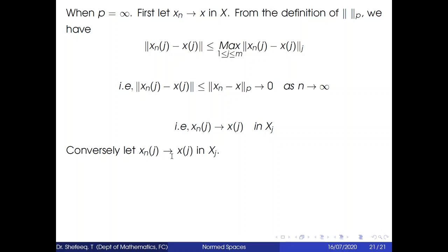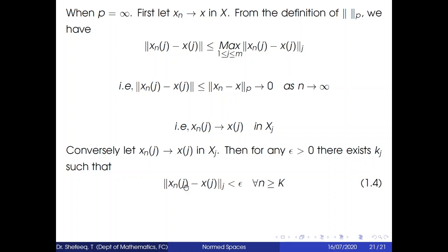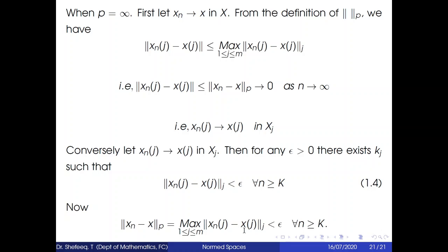Conversely, let x_n(j) → x(j) in X_j. Then for ε > 0, there exists K_j such that ‖x_n(j) − x(j)‖_j < ε for all n ≥ K_j. Let K = max{K_j}. Then ‖x_n − x‖_∞ = max_j{‖x_n(j) − x(j)‖_j} < ε for all n ≥ K. This means ‖x_n − x‖_∞ → 0 as n → ∞, showing x_n → x in X. This is the proof of Theorem 5.2.